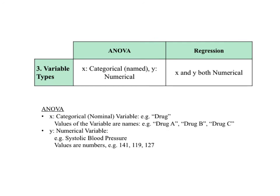In ANOVA, the independent variables X's must be categorical, otherwise known as nominal. That is, the different values of X in the category — for example, drug — must be names, such as drug A, drug B, and drug C, rather than numbers. The dependent variable Y must be numerical — for example, a blood pressure measurement like 141, 119, or 127.